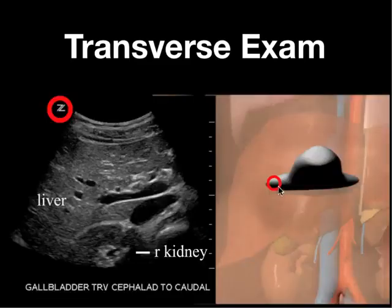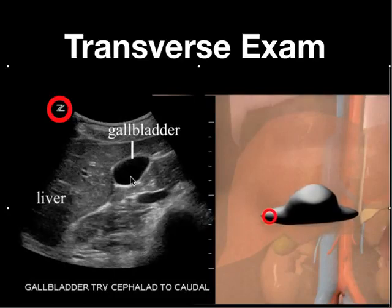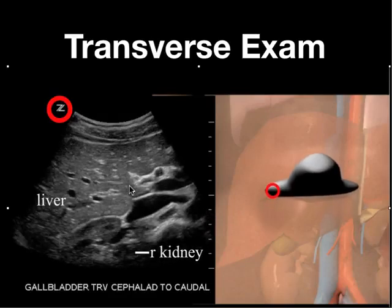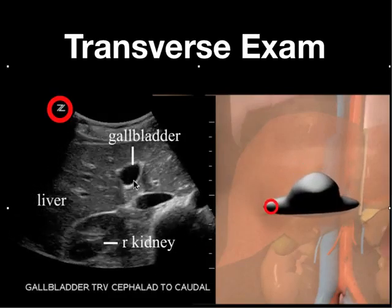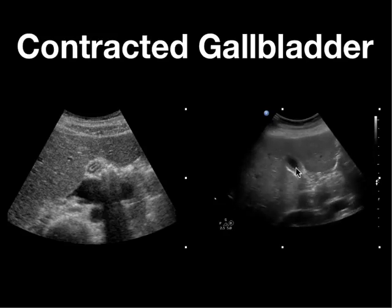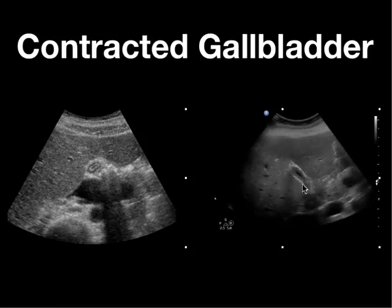Here's a transverse exam, a sweep going from the cephalad region caudally. As we start off you can see the gallbladder; now we're moving down towards the fundus, and as we come back up, this is going to be the gallbladder neck. On patients who have an S-shaped gallbladder or a relatively tortuous neck, it's easier to follow the neck in the transverse plane. Here are a couple examples of contracted gallbladders in the transverse plane — here you can see the wall and the lumen, but there's essentially no bile in there.